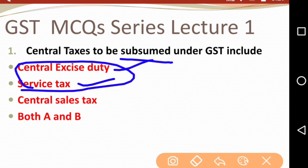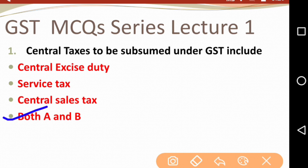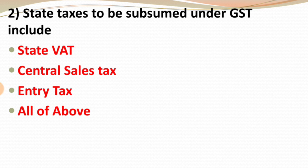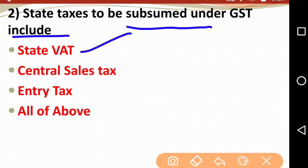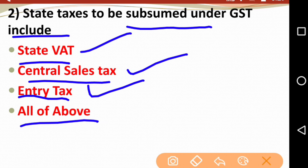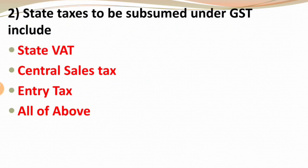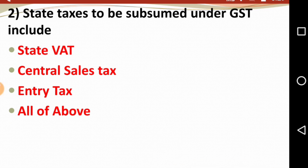Next question: State taxes to be subsumed under GST include — State VAT, Central Sales Tax, Entry Tax, or All of the Above? Since State VAT, Central Sales Tax, and Entry Tax are all subsumed under GST, all three options are correct. The right answer is All of the Above.